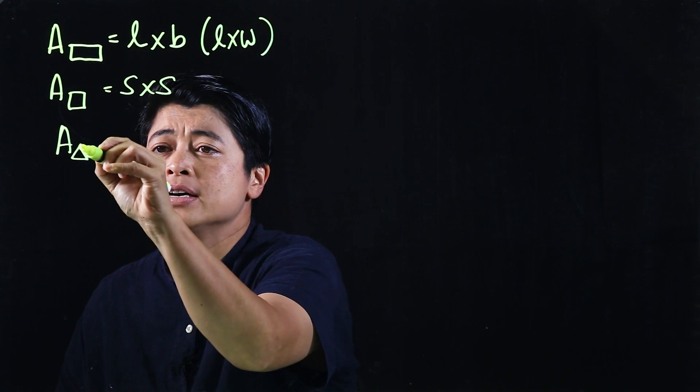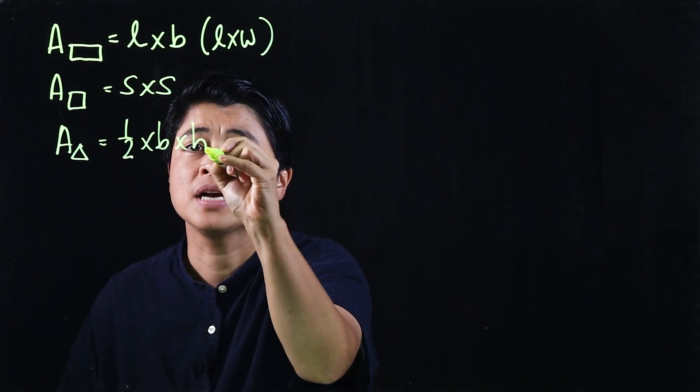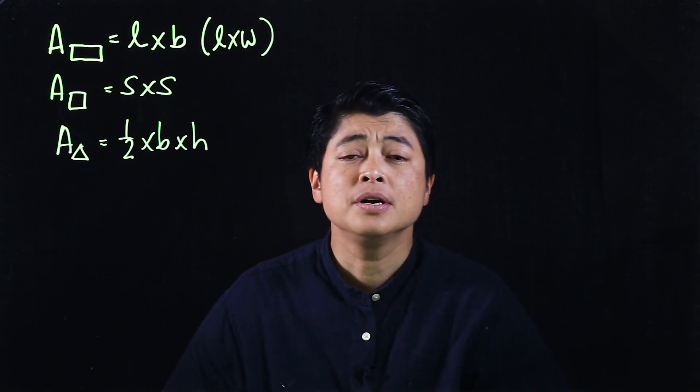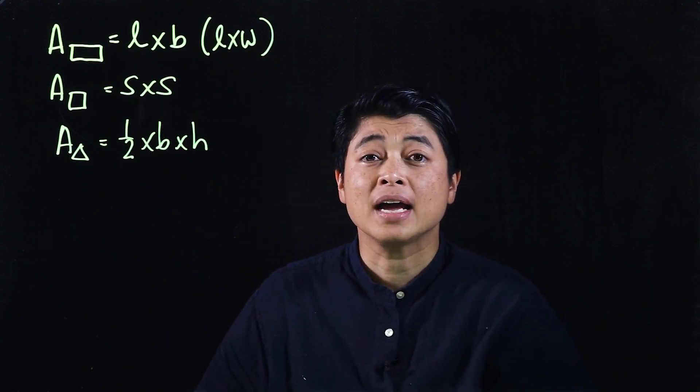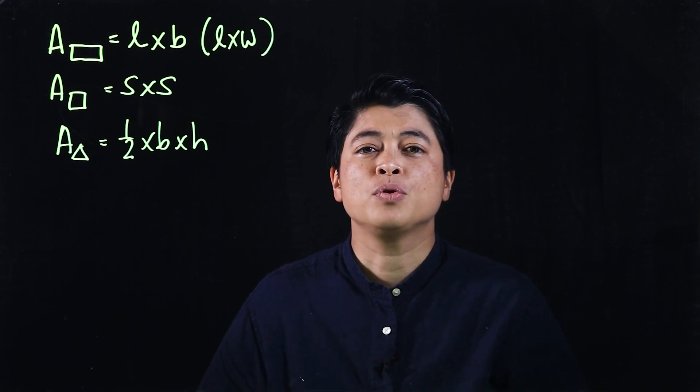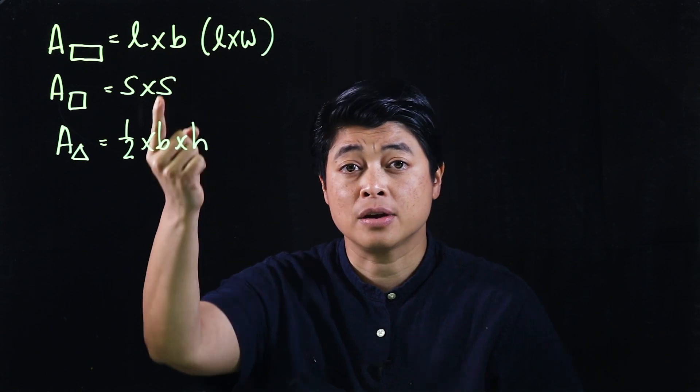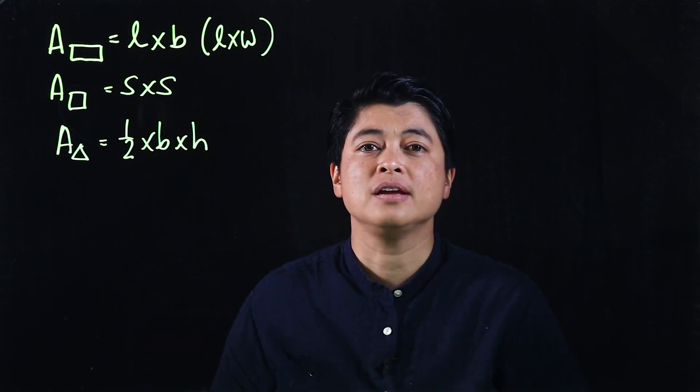Now we know the area of a triangle is one-half times base times height. When we look at the exercises for today's lesson, we need to be able to apply either two or all three of these formulas.